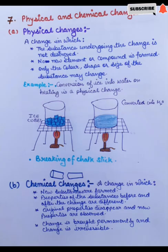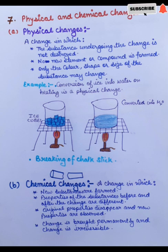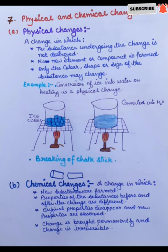Physical and chemical changes. Physical changes: a change in which the substance undergoing the change is not destroyed, no new element or compound is formed, and only the colour, shape, or size of the substance may change. For example, conversion of ice into water on heating is a physical change. Similarly, breaking of a chalk stick is also a physical change.